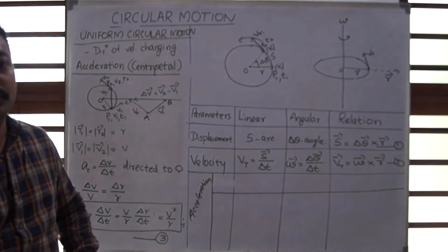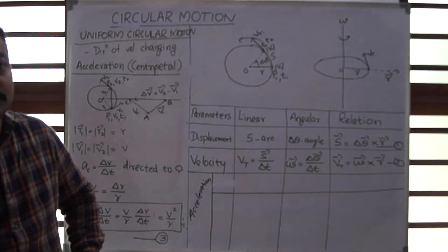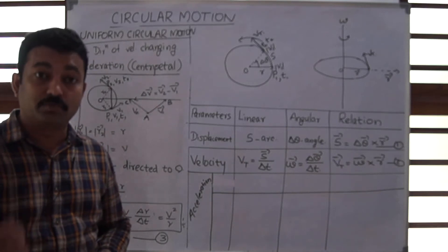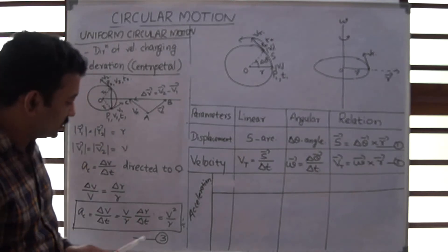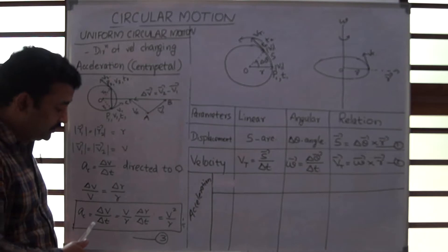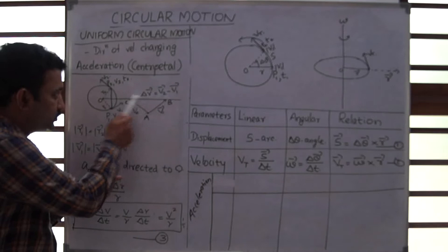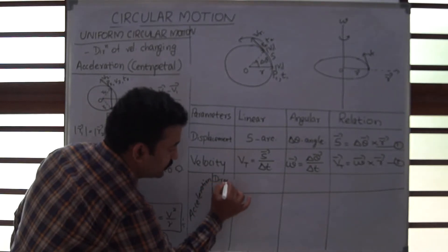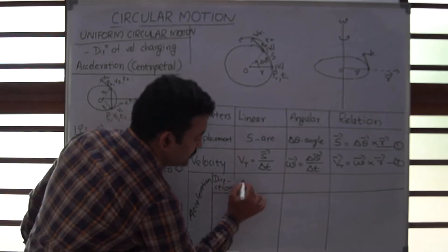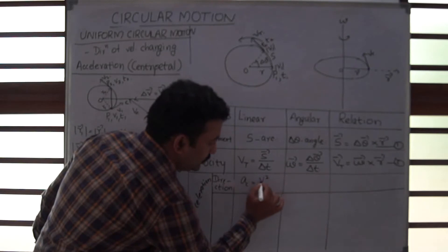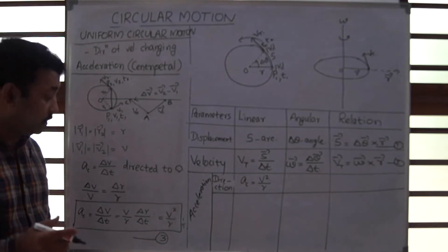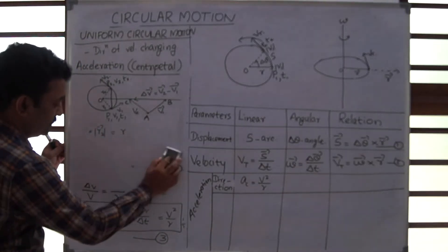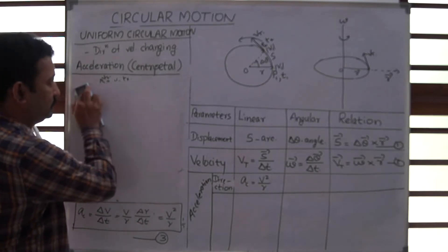We have seen the different concepts of uniform circular motion in session 1. Welcome to the virtual classes of science, where we are going to extend our studies into the non-uniform aspect of circular motion. We have the equation for centripetal acceleration, and the direction of centripetal acceleration is towards the center. I got centripetal acceleration because of the change of direction of velocity — this is a linear concept.